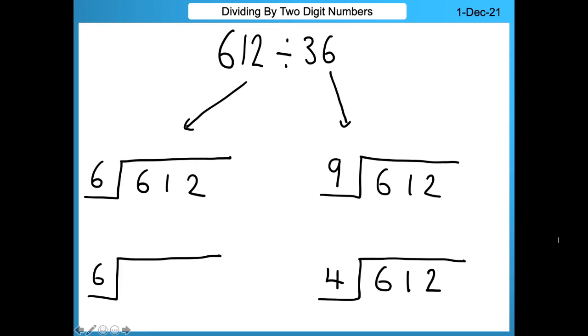Now you know the key idea of dividing by two digit numbers. Now it's over to you. So this is my problem to you: 612 divided by 36. Now you can take the route on the left, divide by six and then divide by six again. Or you can take the route on the right, divide by nine and then divide by four. Or you could find another route to take as well. The choice is yours. And if you have an answer for me, then do pop it down in the comments below as well.